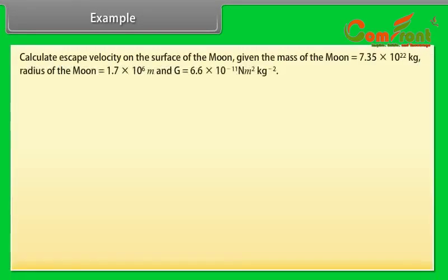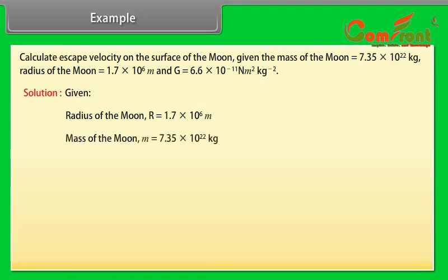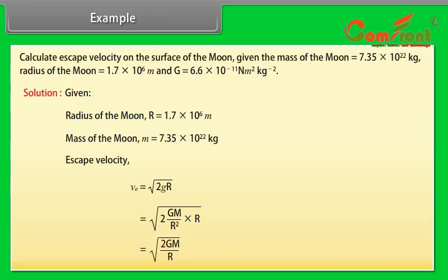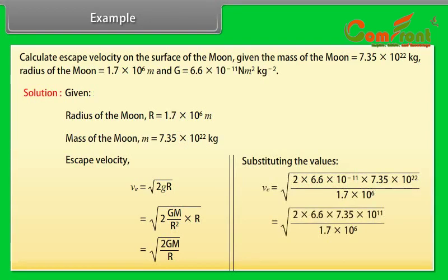Example. Let's take an example of escape velocity. Calculate escape velocity on the surface of the moon given the mass of the moon, radius of the moon, and value of g. Let's see the solution. Given: Radius of the moon R is equal to 1.7 into 10 to the power 6 meter. Mass of the moon M is equal to 7.35 into 10 to the power 22 kg. Escape velocity is equal to under root 2gr. By putting the value of g, we get escape velocity is equal to under root 2gm upon r. By substituting the values, we get escape velocity is equal to 2.4 into 10 to the power 3 meter per second.